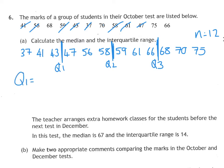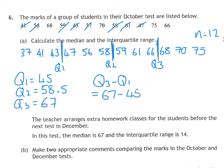At the side I'm going to write Q1 equals halfway between 43 and 47 is 45. Between 58 and 59 is 58.5, and my Q3 between those two is 67. Interquartile range is Q3 minus Q1, which is 67 take away 45, which is 22. My interquartile range is 22.